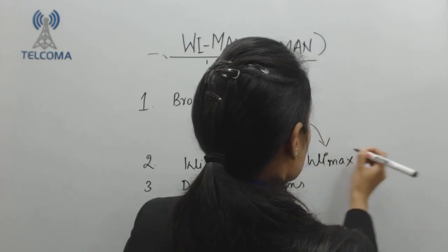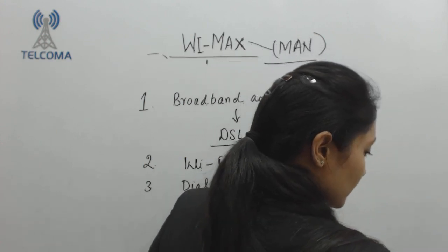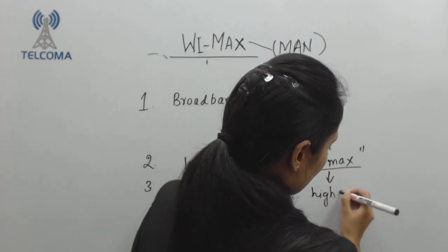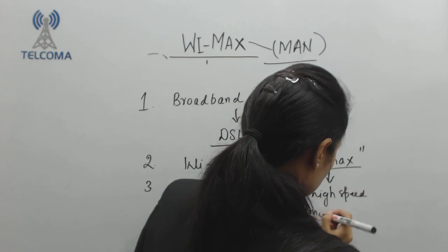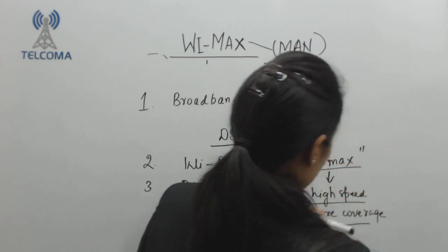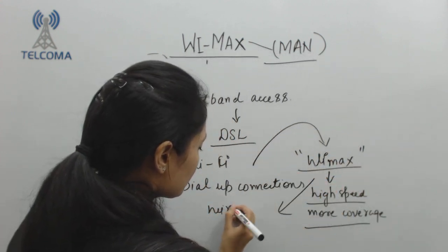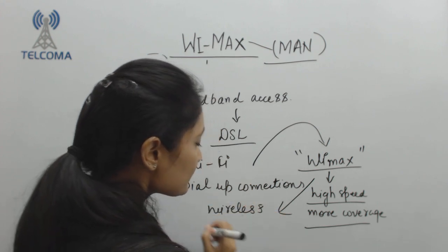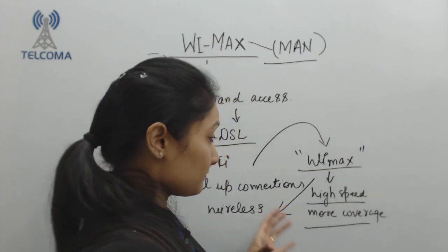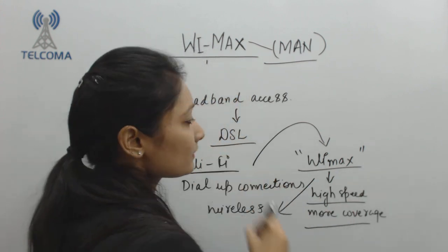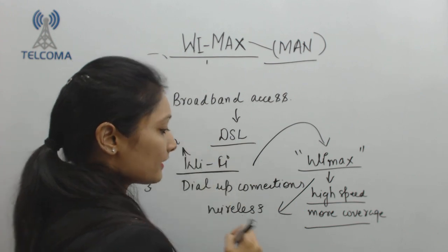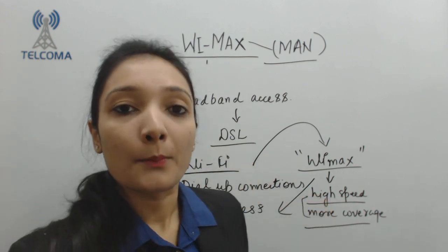WiMAX offers high speed and more coverage — wireless access of the internet over a broad coverage area. Looking at Wi-Fi, it does not include broad coverage. Wi-Fi access is also wireless, but the coverage is not broad. This is the key motivation behind the development of WiMAX technology.